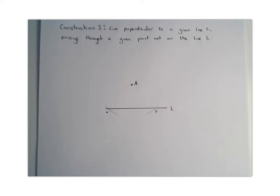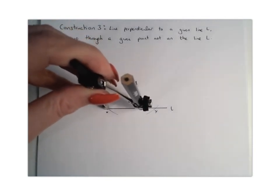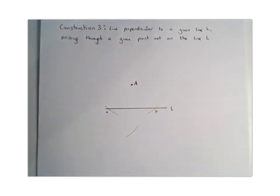What you're going to do next, then, is you're going to place your compass at point X, and again, make sure your compass is more than halfway, and you're going to draw an arc down here,